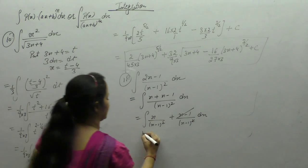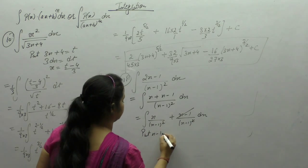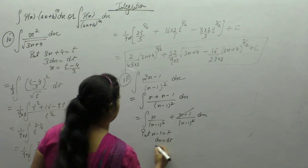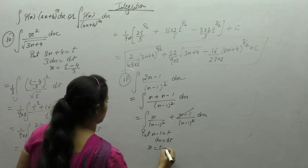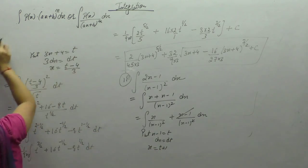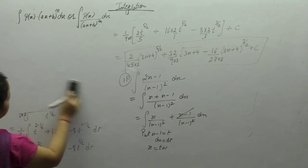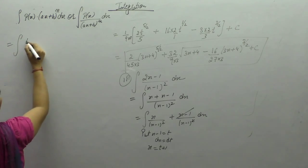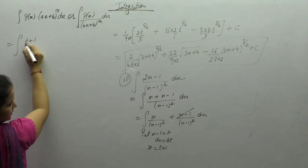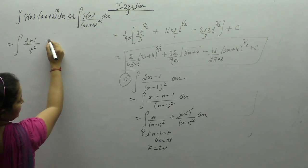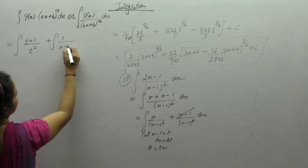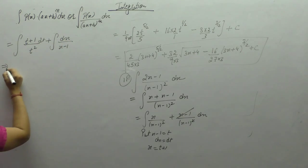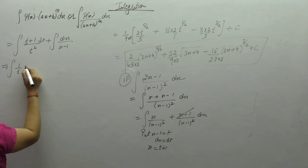Here, put x minus 1 as t, so x is t plus 1. This gives us t plus 1 upon t square.